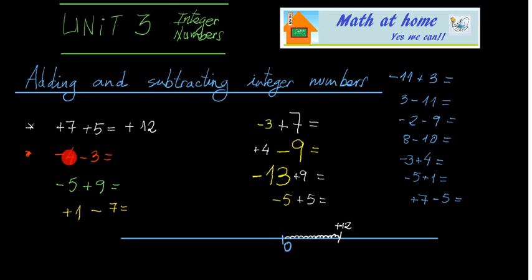What about this operation? It is negative 4, so 4 steps to the left — because it's negative, we move to the left — and then 3 more steps to the left. So the result is that we have moved 7 steps to the left, giving us negative 7. This one: minus 5 steps to the left, and now positive 9, so 9 steps to the right — we get to positive 4. The result is positive 4.